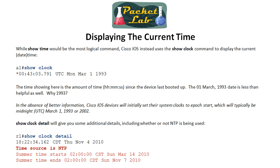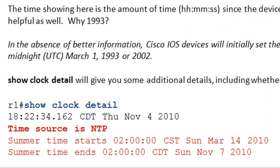We haven't shown you how to actually display the time on a Cisco device. 'Show time' would seem logical but 'show clock' is the command you'll use. These slides are from my other lesson on setting the time manually. Basically, 'show clock' shows the software clock, and 'show clock detail' is a good command to know because it shows not only what the software clock is set to but where it got that information from.